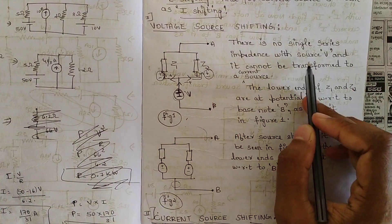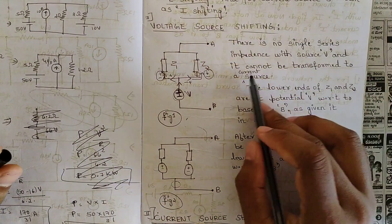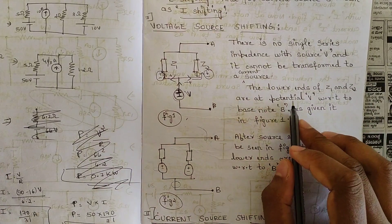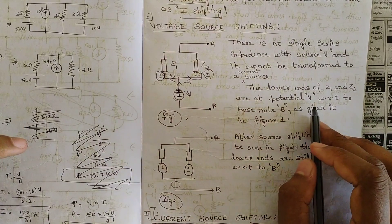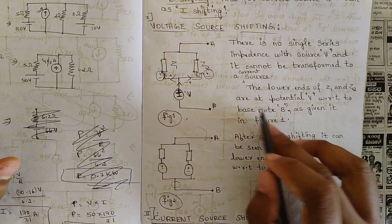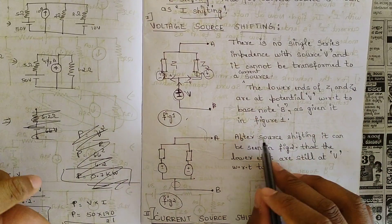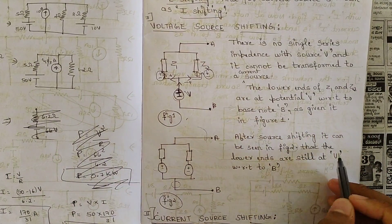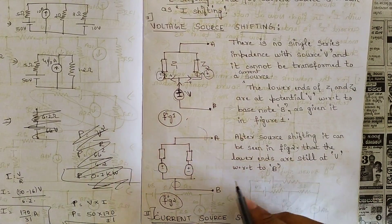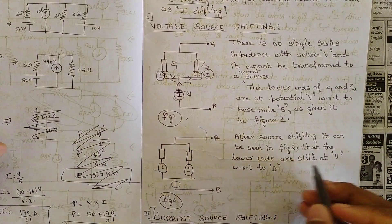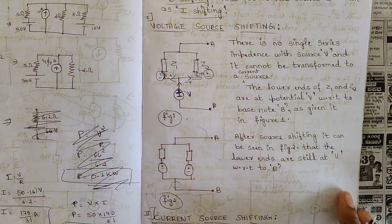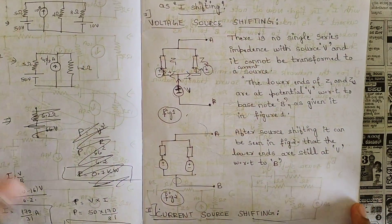There is no single series impedance with source V, so it cannot be transferred to a current source. The lower ends of Z1 and Z2 are at potential V with respect to base node B as given in figure 1. After source shifting in figure 2, the lower ends are still at V with respect to B — the polarities are not changed. This is the simple voltage source shifting.